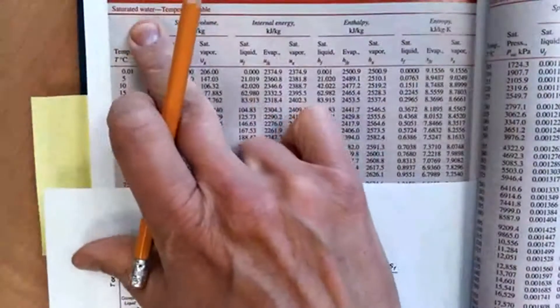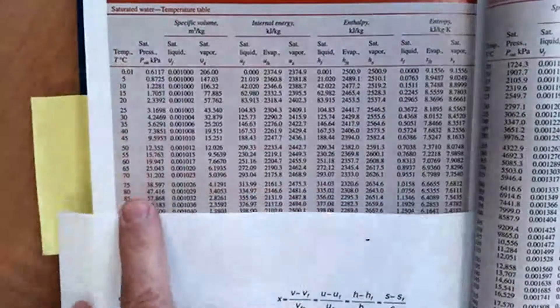You're just going to go to the saturated table and you're going to look at the saturated table at 100 degrees C.